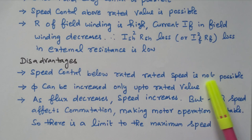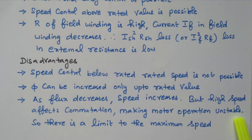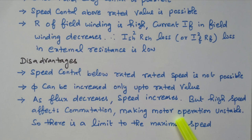Disadvantages: speed control below the rated speed is not possible — only above rated speed. Phi can be increased only up to the rated value. As flux decreases, speed increases, but high speed affects commutation making the motor operation unstable, so there is a limit to maximum speed. We cannot go beyond maximum speed — only approximately 160% of rated speed can be achieved. For example, if rated speed is 1000 RPM, we can go up to 1600 RPM. Above that, commutation problems arise and motor operation becomes unstable.